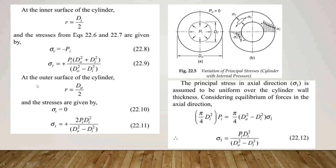At the outer surface, we substitute r equals DO divided by 2, and the stresses generated are: sigma-r equals 0, and sigma-t equals plus 2 times PI times DI² divided by (DO² minus DI²).